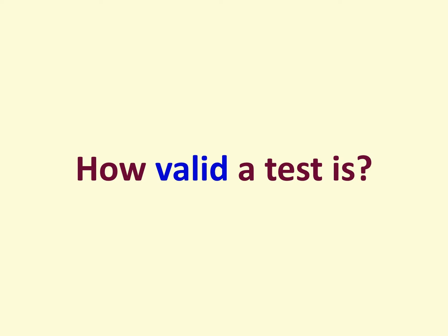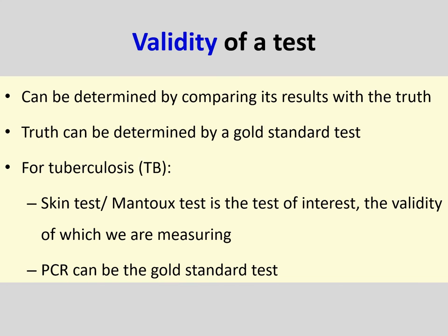Now let's focus on how valid a test is. The validity of a test can be determined by comparing its results with the truth, and the truth can be determined by a gold standard. For example, for tuberculosis, the skin test (Mantoux test) is the test of interest whose validity we are measuring, and PCR can be the gold standard test.